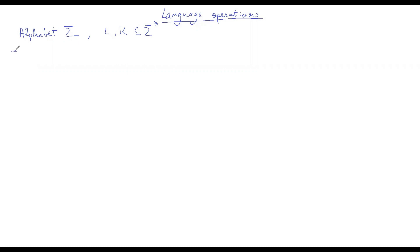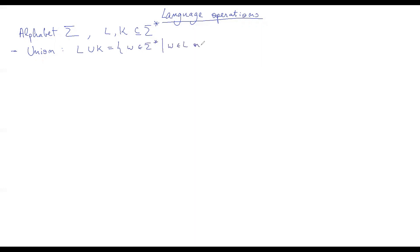The first operation is the union, defined exactly as you might expect when thinking that L and K are sets of words. The union L union K is exactly the set of words W over sigma star such that W is either in L or in K.